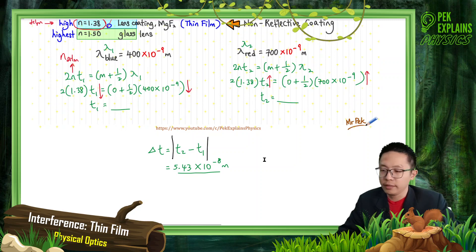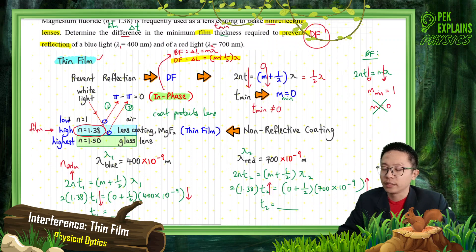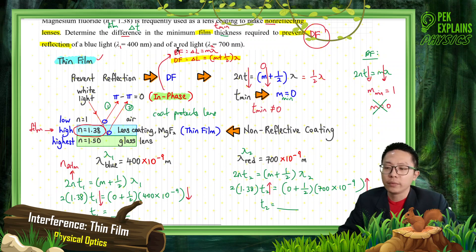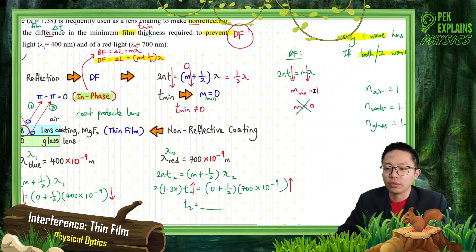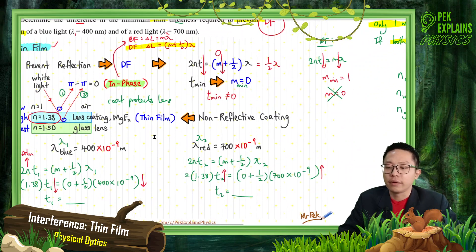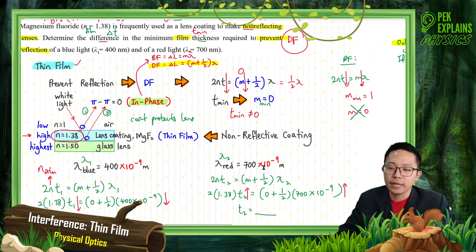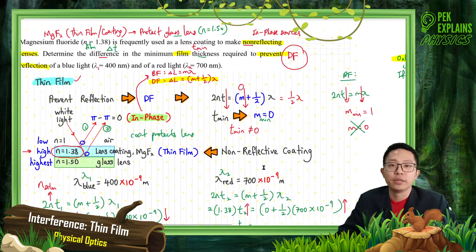To summarize: determine what category applies — low-high-highest or low-high-low. Then determine in-phase or anti-phase, and whether to use bright fringe or dark fringe formula. Then decide the order — M = 0 or M = 1 — and calculate. Thank you and see you in the next video.